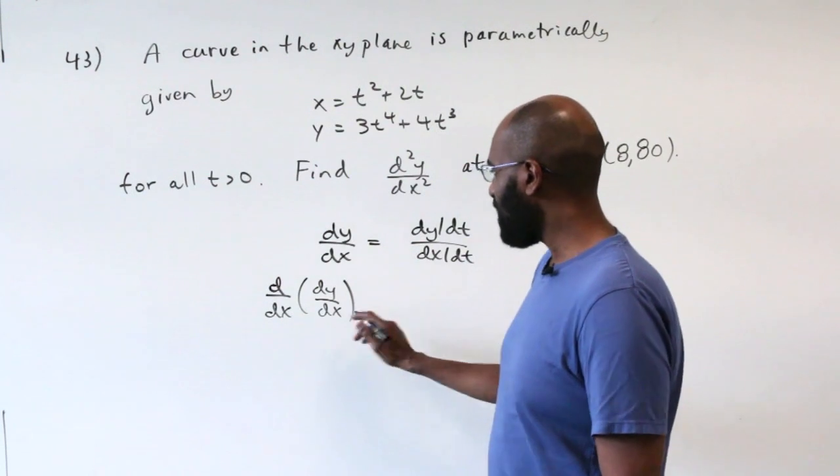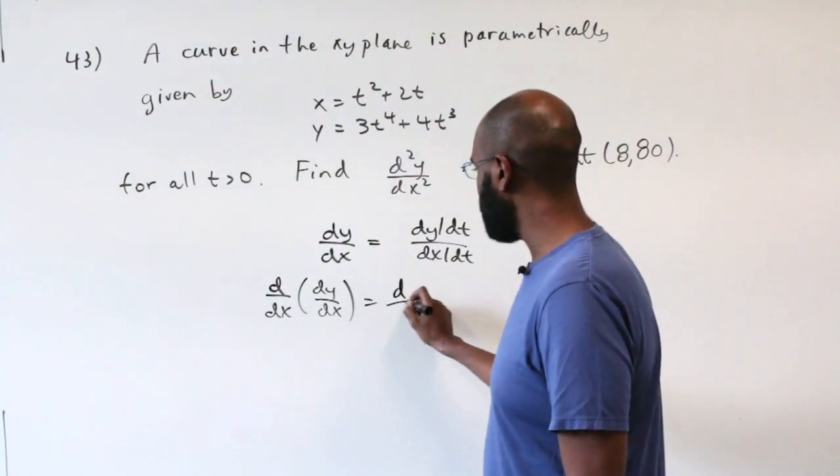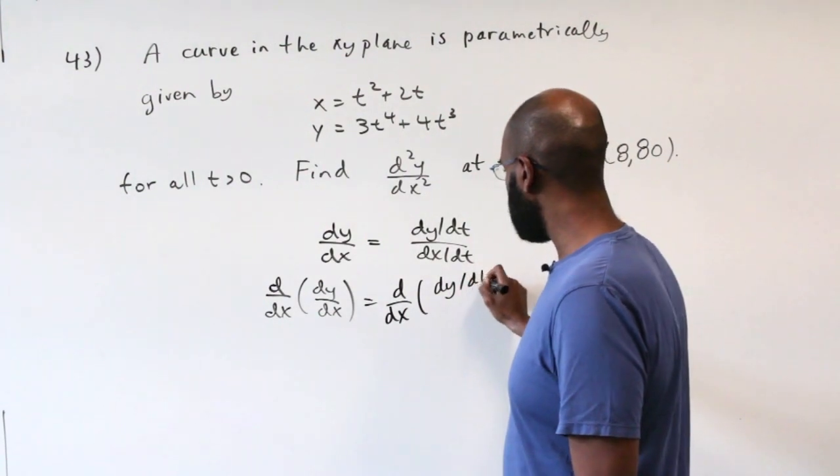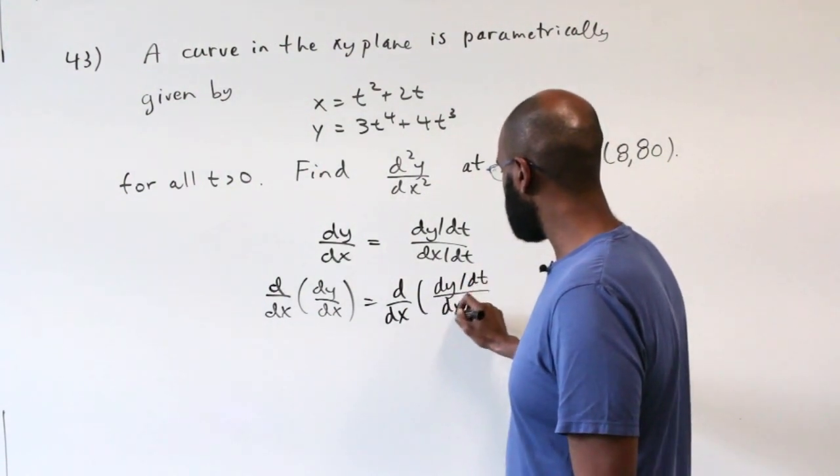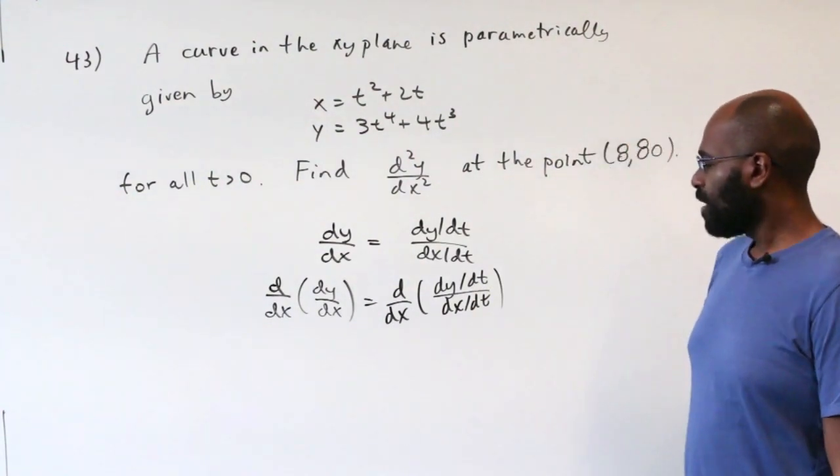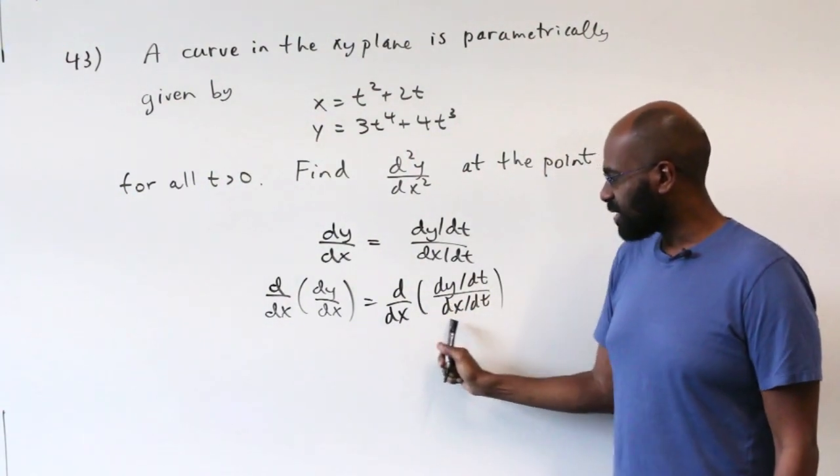So here we don't have things in terms of t, but we can come close. We have d/dx of (dy/dt)/(dx/dt), which we saw from this thing right over here. But this here is a function of t. It's not actually something we can differentiate with respect to x, but we can if we introduce a dt/dx.